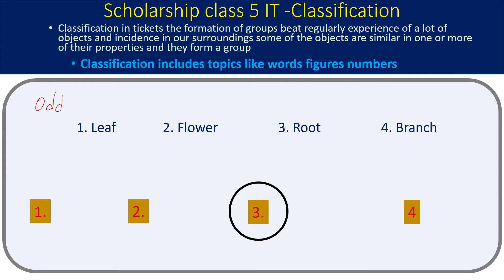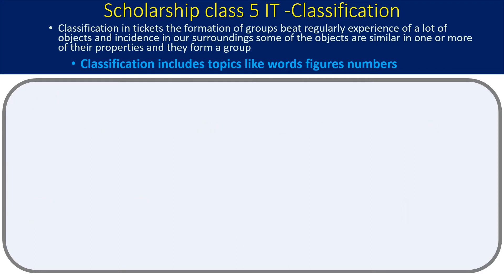This ability to identify, group, or classify will be tested, and it is considered a test of intelligence. Here is another set: tabla, dalak, sitar, mrdang. These are man-made things — musical instruments — and the question is again to pick out the odd one that doesn't come in the group.